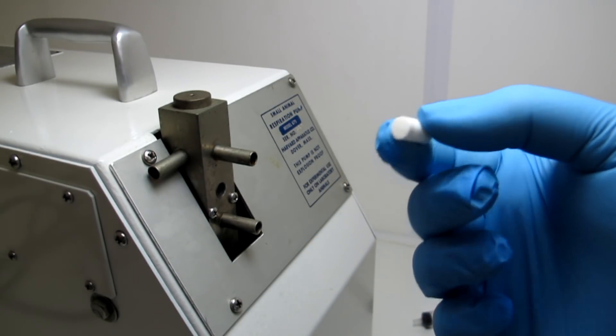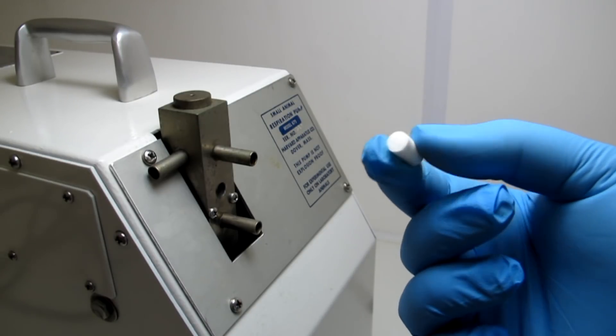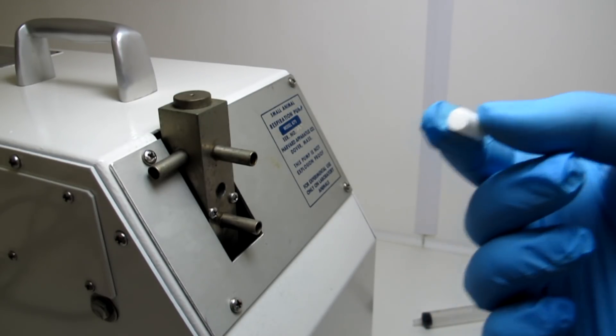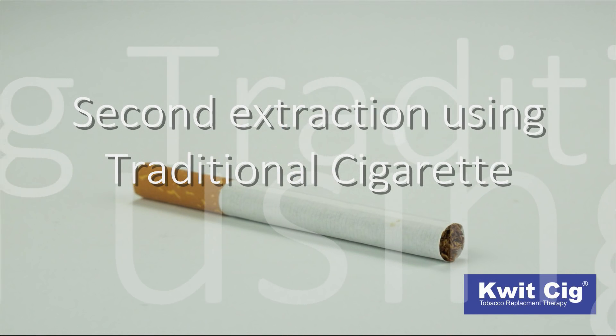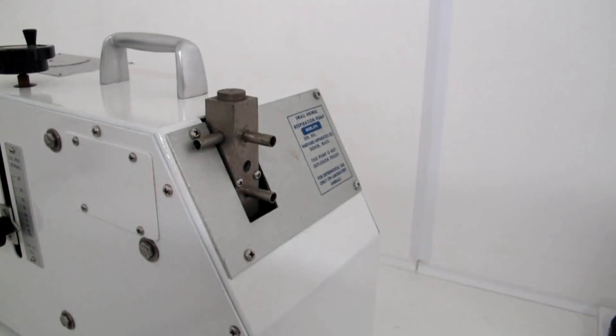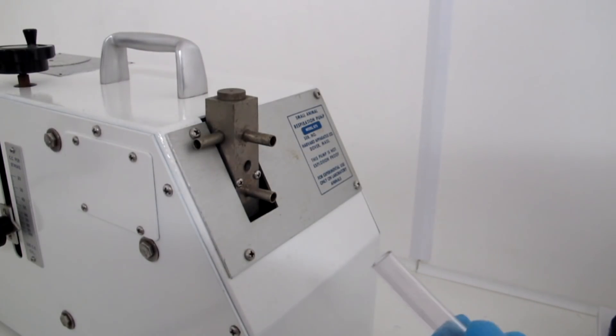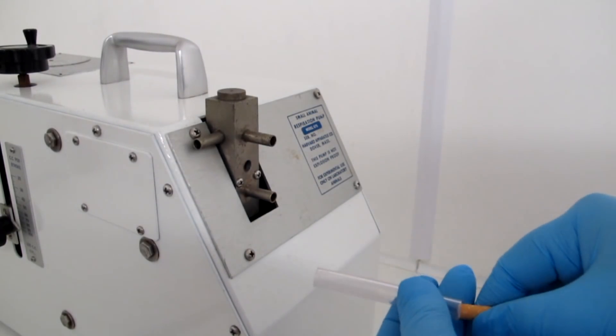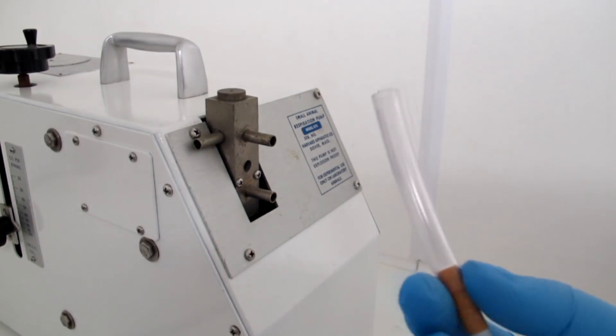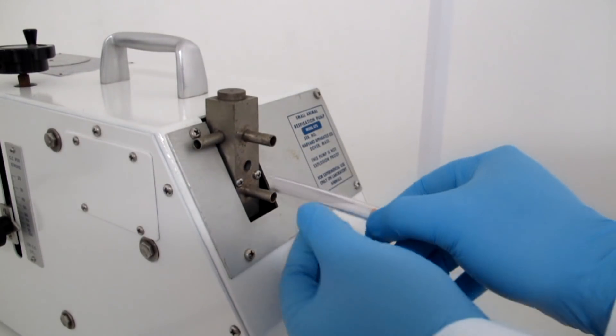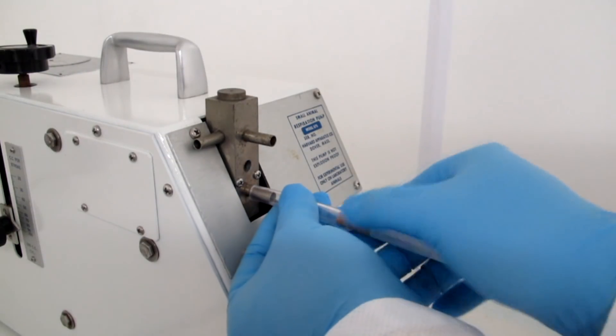Next thing we're going to do, we're going to put a normal standard traditional cigarette on. We'll see how that goes. So the first thing we're going to do is we're going to put the cigarette inside the tube. And as you can see, it's completely clear. Nothing. So we'll put that on the inhale.